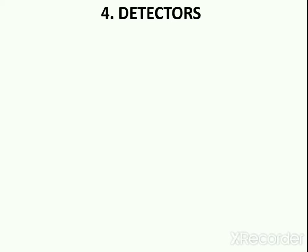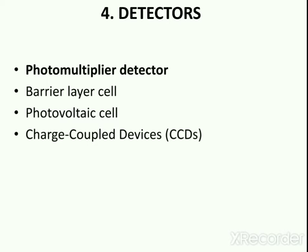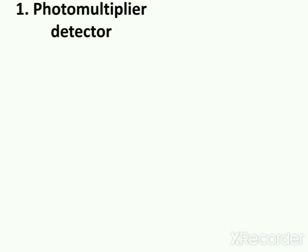Detectors are used to detect the radiation obtained from the sample in ultraviolet visible spectrophotometer. There are different types of detectors used: first is the photomultiplier detector, second is the barrier layer cell, third is the photovoltaic cell, and the next one is charged coupled devices.